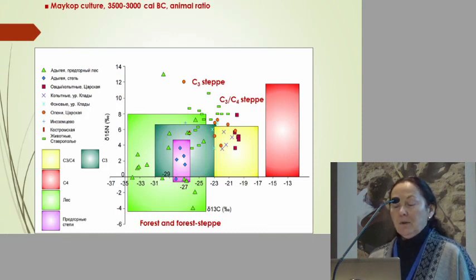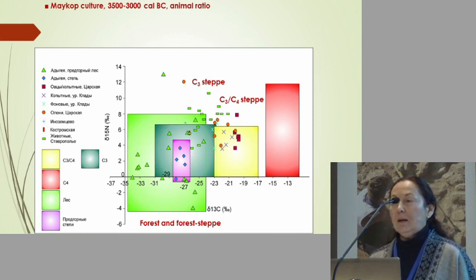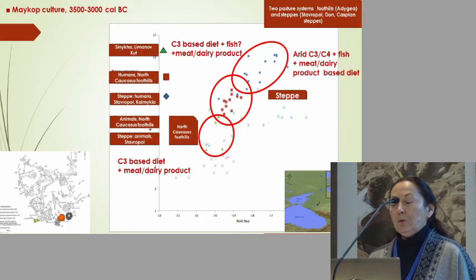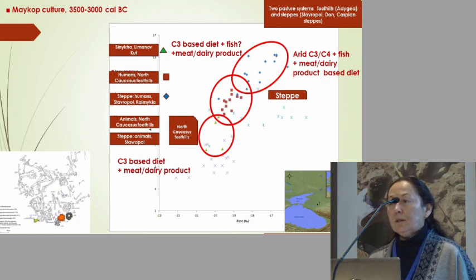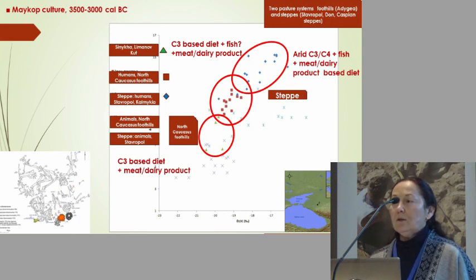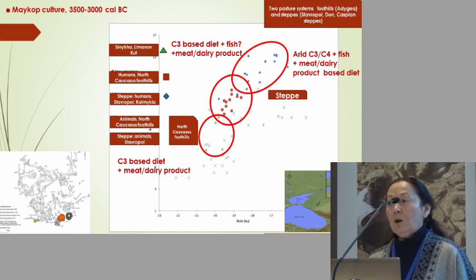Maykop culture is also very interesting. We analyzed quite a lot of animal data, and it was evident that the Maykop animals were pastured in different pastures. At least at the moment we could say that two pasture systems were used during the Maykop culture — one system was located in the foothills and the other was located in the steppe. The variations in the stable isotope levels in humans who lived in the steppe showed that those people had to be quite mobile.